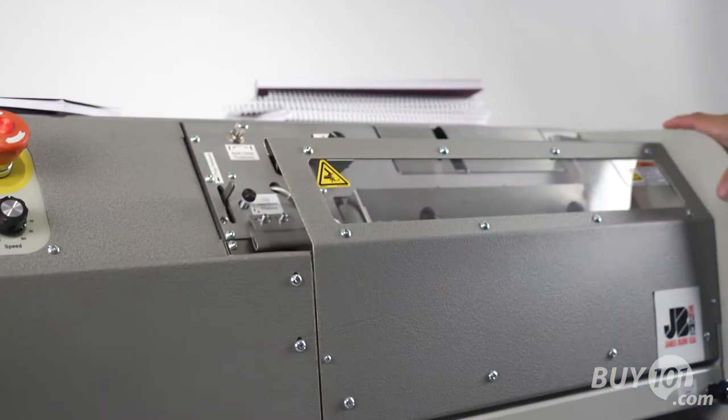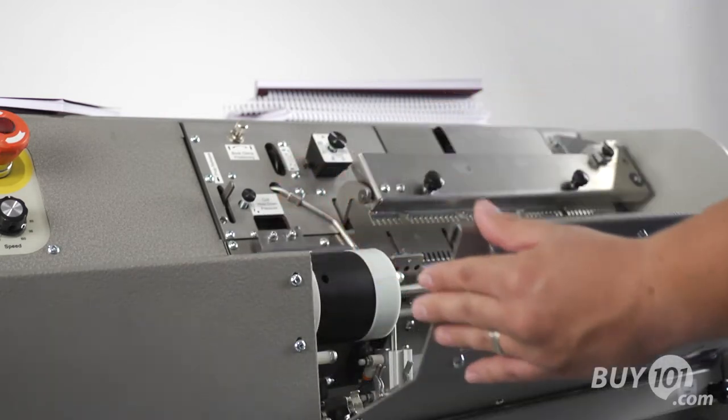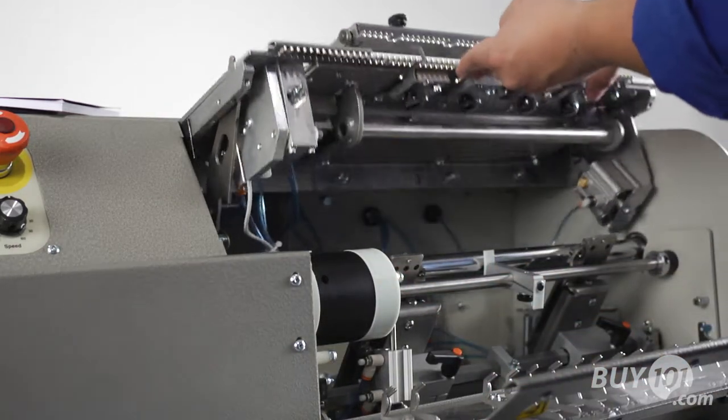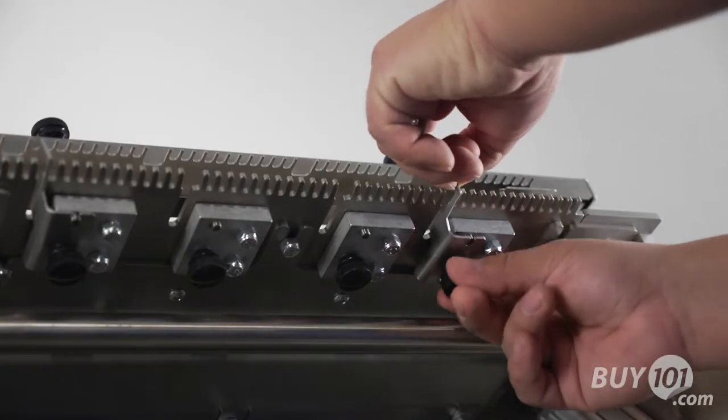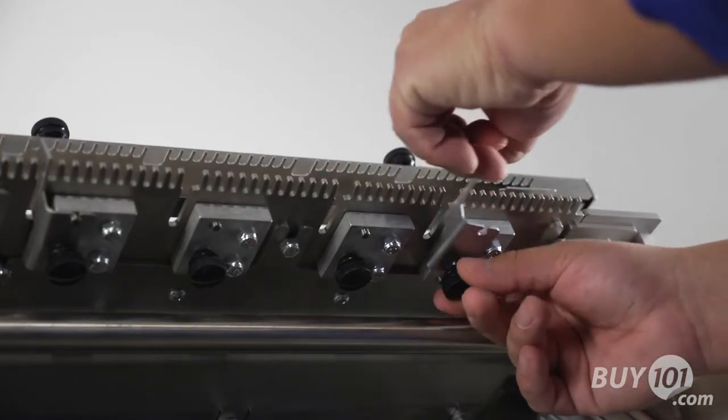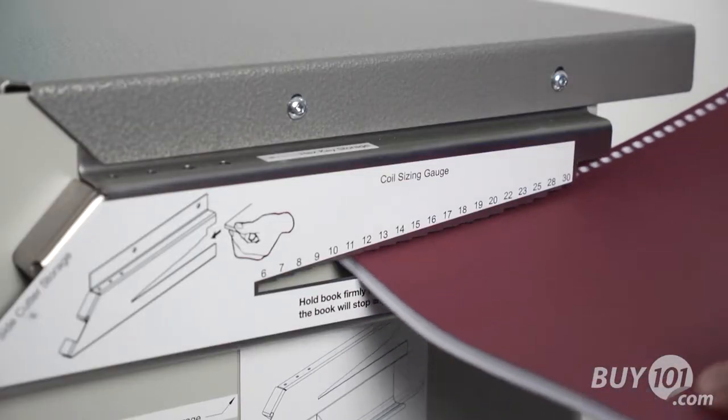The QS in CB30QS stands for Quick Setup, and that's what this machine delivers. No tools are required for basic setup. Changeover between jobs takes only minutes with the unique coil sizing and carriage adjustment gauge.